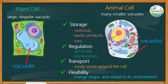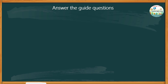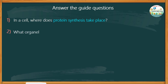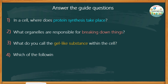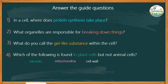Try to answer the guide questions. Number one: in a cell, where does protein synthesis take place? Number two: what organelles are responsible for breaking down things? Number three: what do you call the gel-like substance within the cell? And number four: which of the following is found in plant cells but not in animal cells — vacuole, mitochondria, cell wall, or ribosomes?